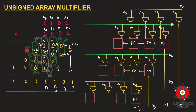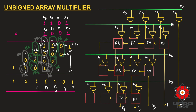Continuing the analysis: with one partial product and carries from one half adder and two full adders, we proceed. The first three bits use full adder FA1 whose carry goes to the next stage. The remaining sum and one previous-stage carry and one partial product form three bits again, requiring another full adder. This particular stage uses one half adder and two full adders, and the fifth bit p4 is indicated in the structure.